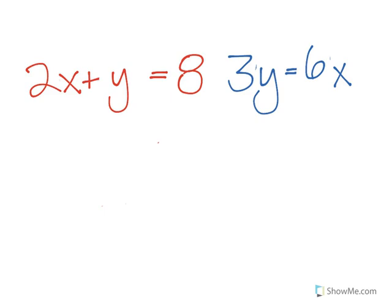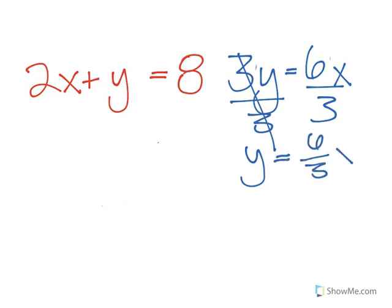First, you have to get one of the variables in one of the equations by itself. So we're using the second equation and solving for y. To solve for y, first divide by 3. Now we get y equals 2x.